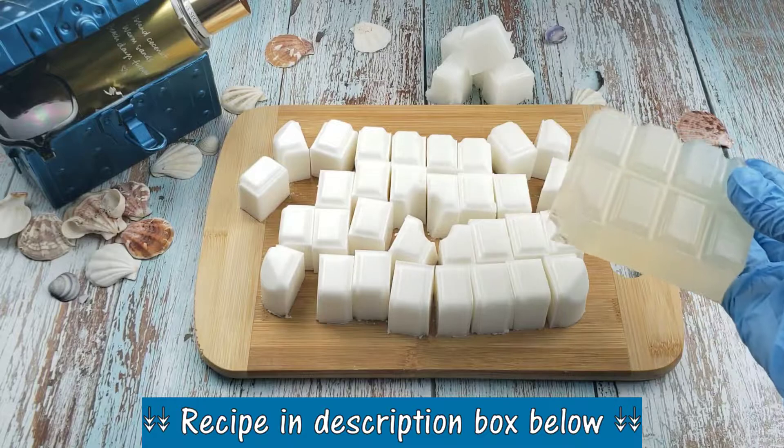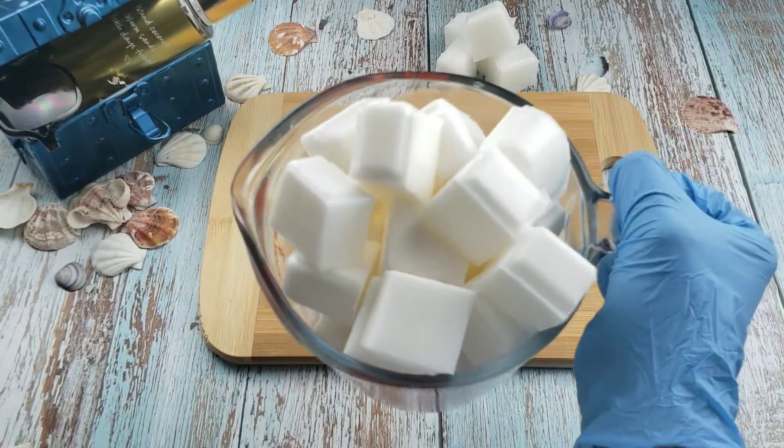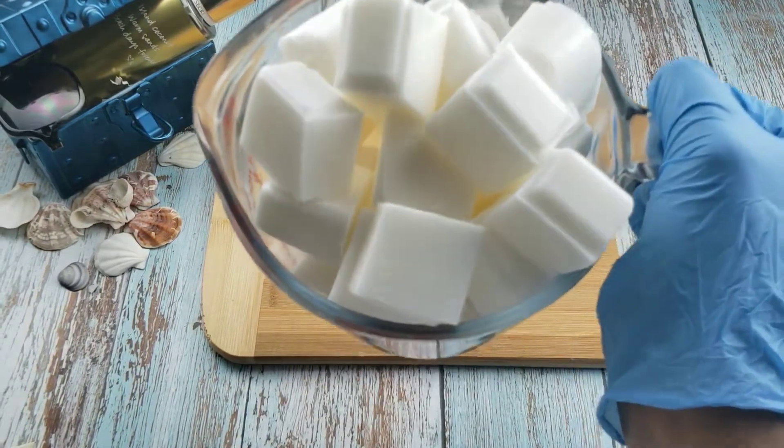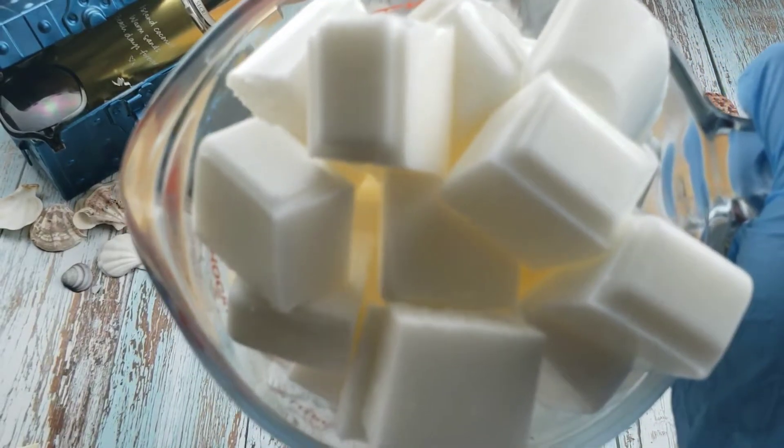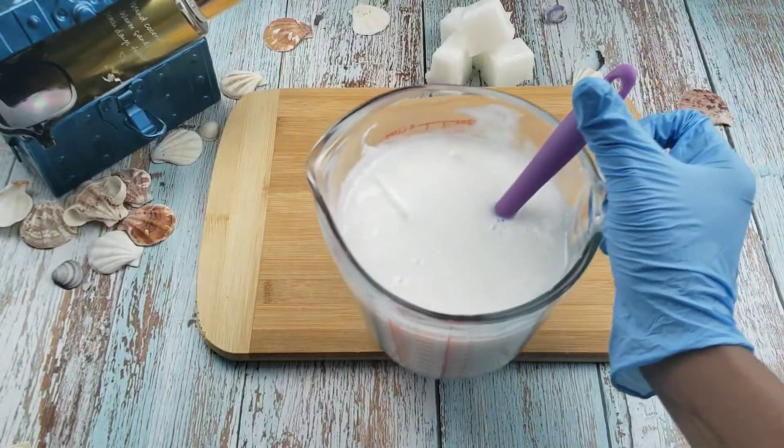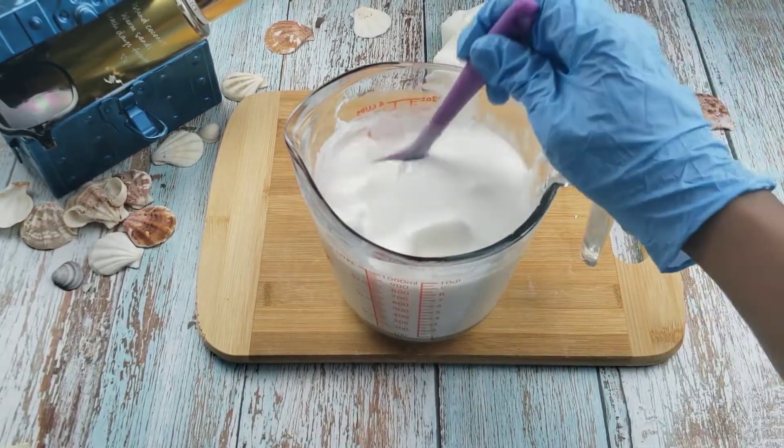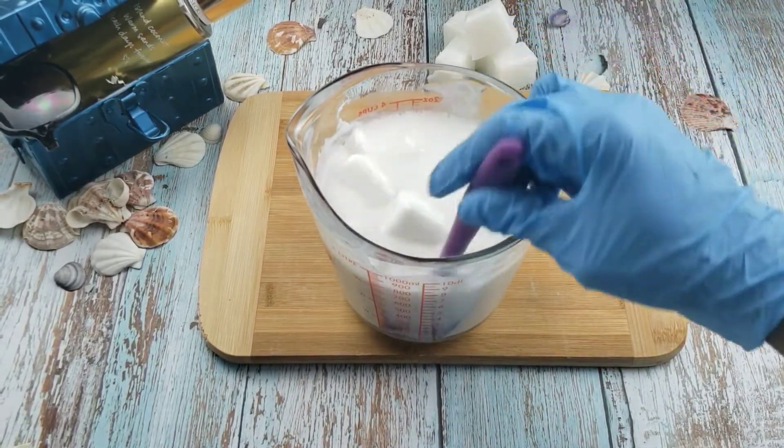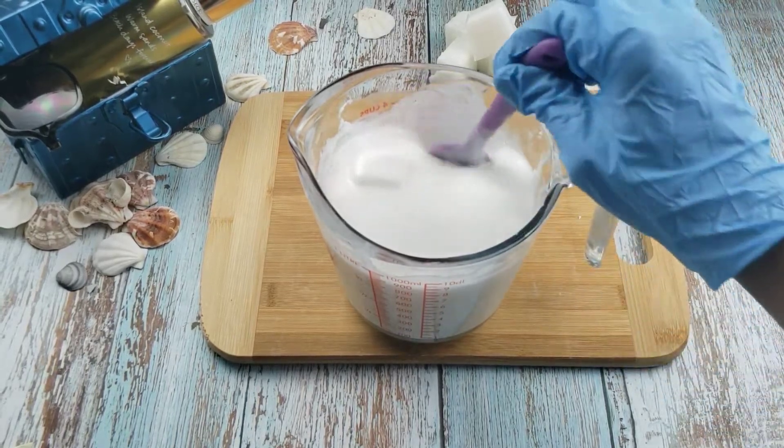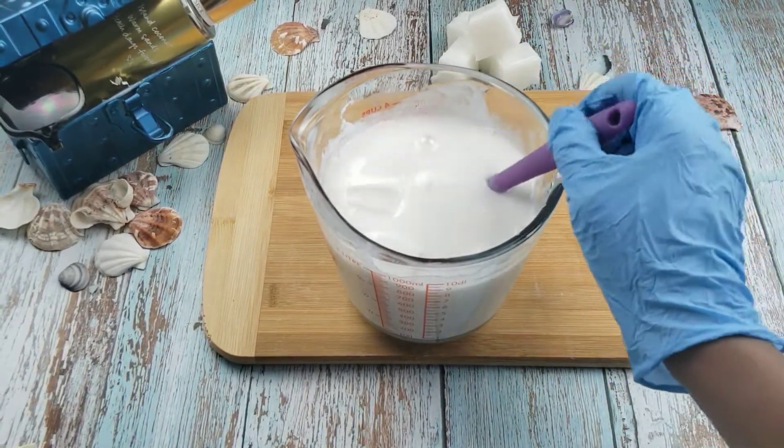I'm placing the cubed coconut milk soap into a glass measuring cup then melting in the microwave for about one minute. This is what it looks like after one minute. It was at this time I remembered that I needed to melt my clear base first for the design I was going to make, so I set this to the side and grabbed the clear base.